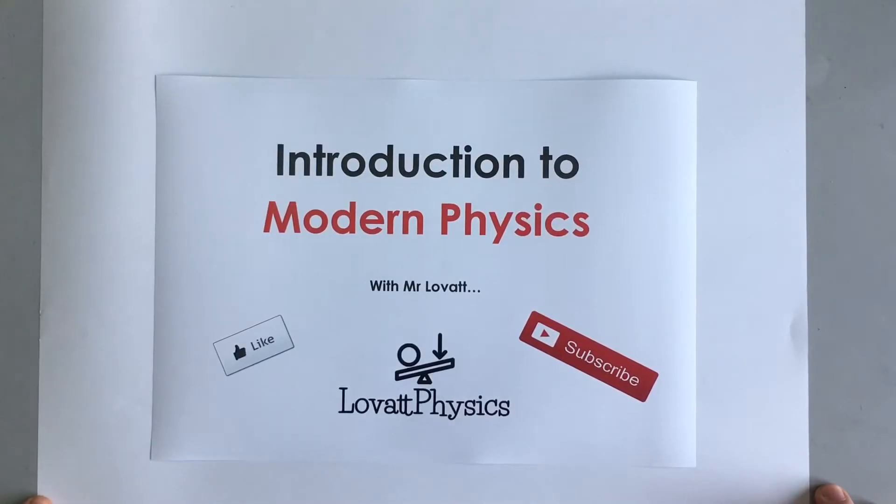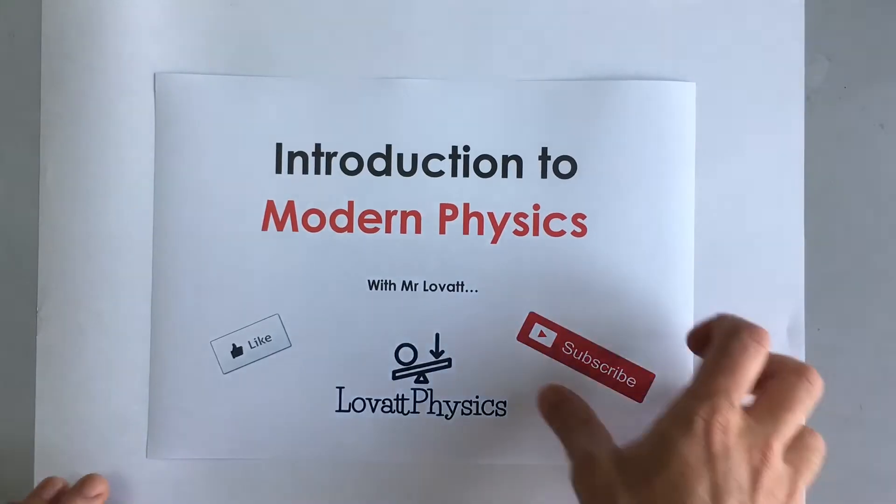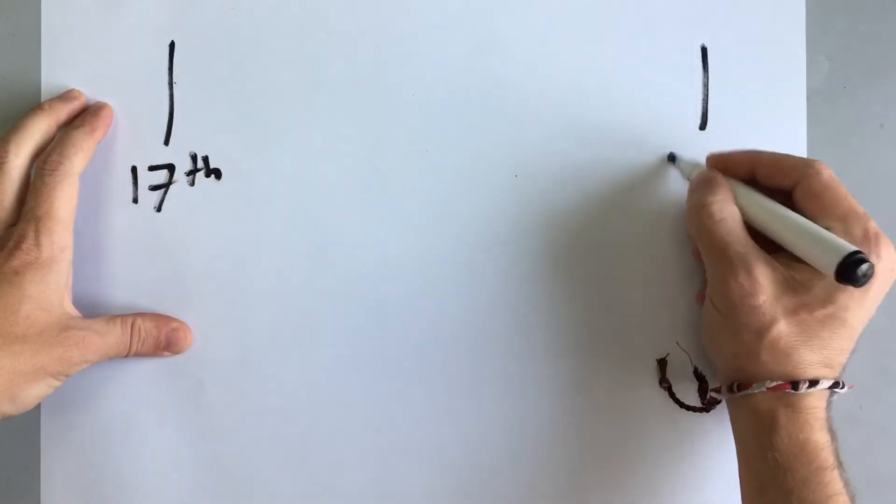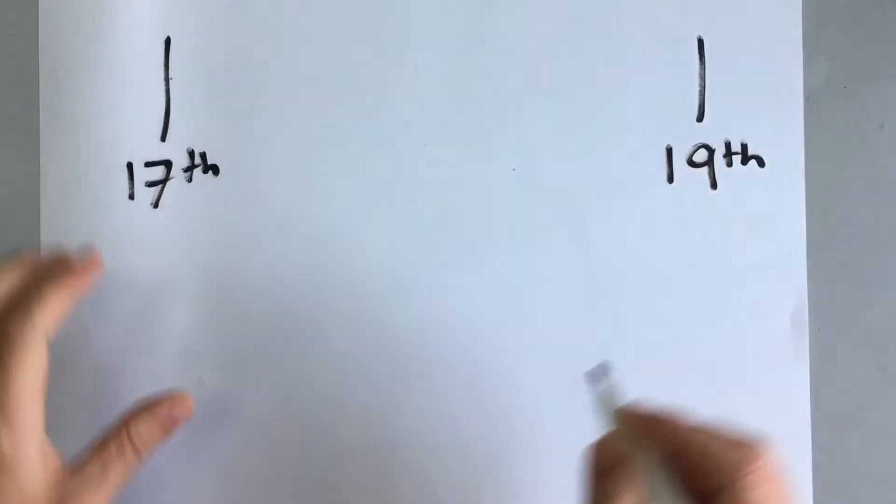This is a Love at Physics IB video introducing modern physics. Between the 17th and the 19th century, there were an enormous amount of scientific discoveries, particularly in physics.